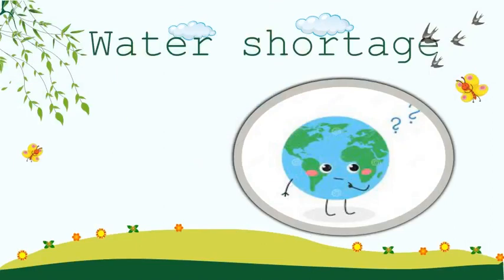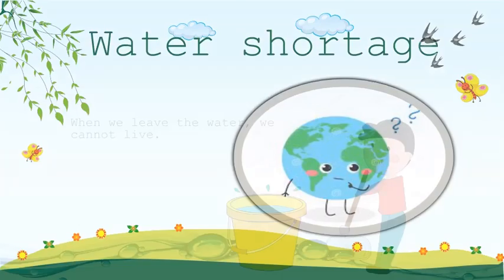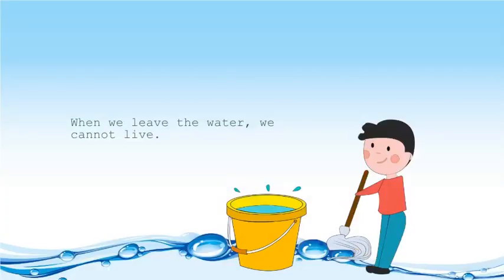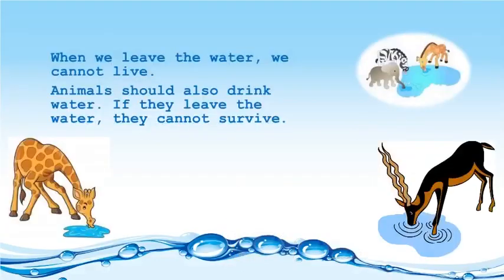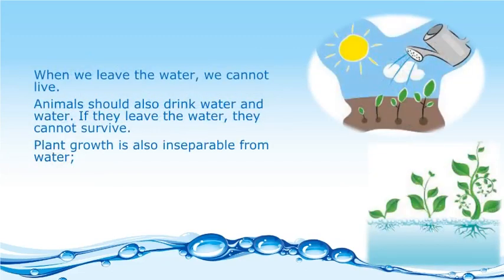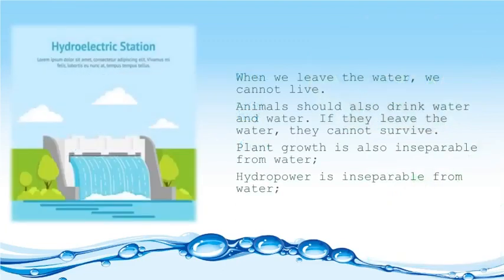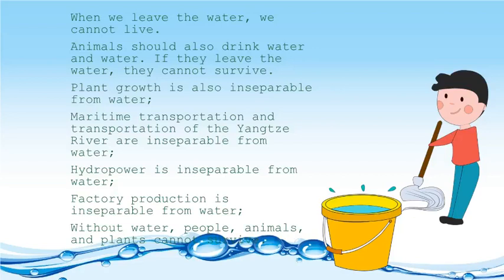Have you ever thought: when there is no water, we cannot live. Animals also need to drink water — if they have no water, they cannot survive. Plant growth is inseparable from water. Hydropower is inseparable from water. Factory production is inseparable from water. Without water, people, animals, and plants cannot survive.